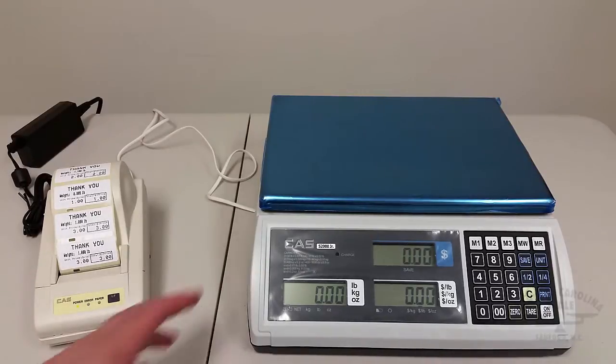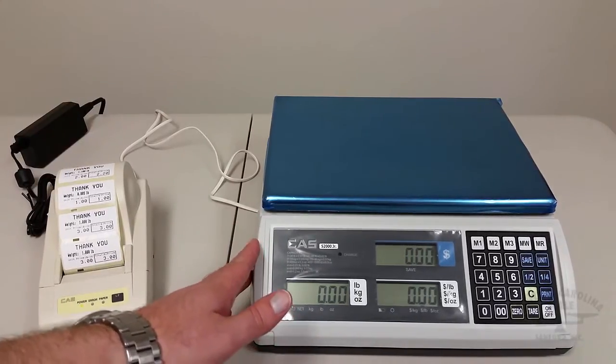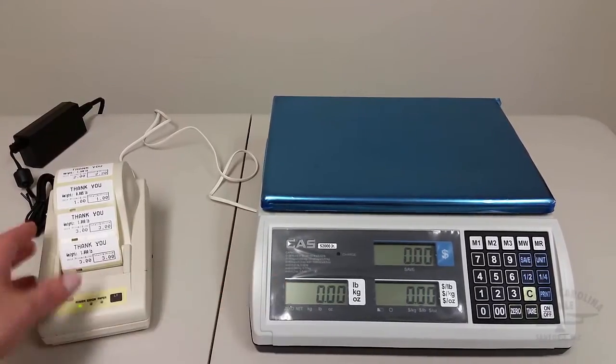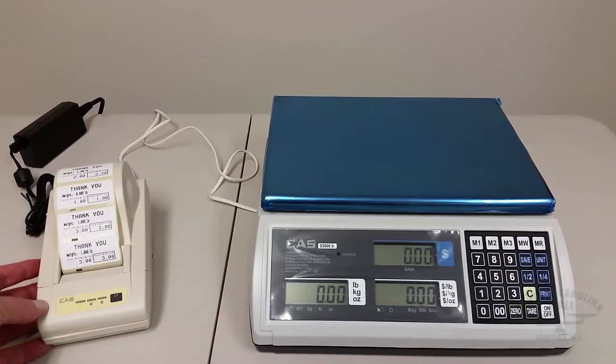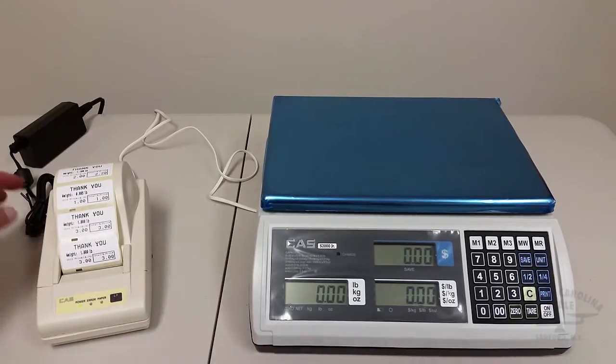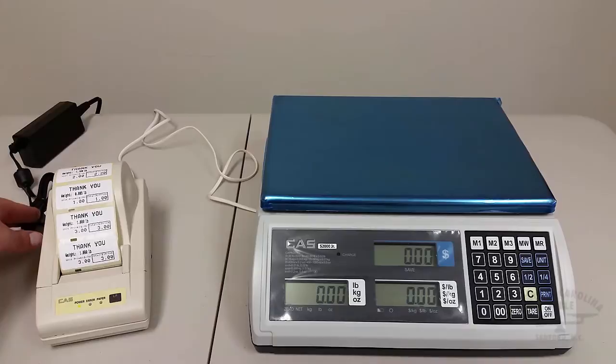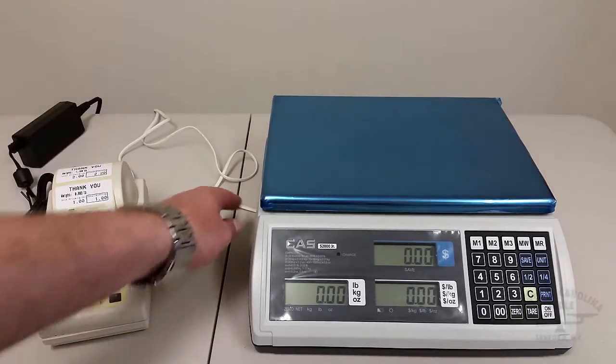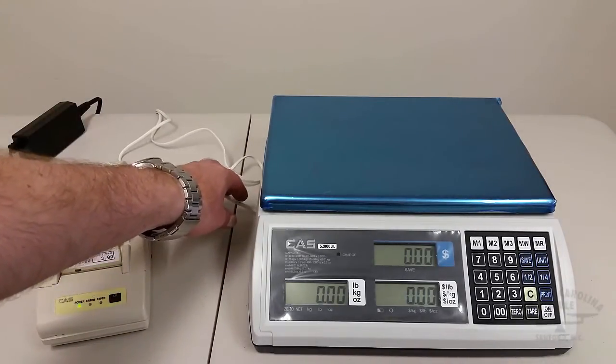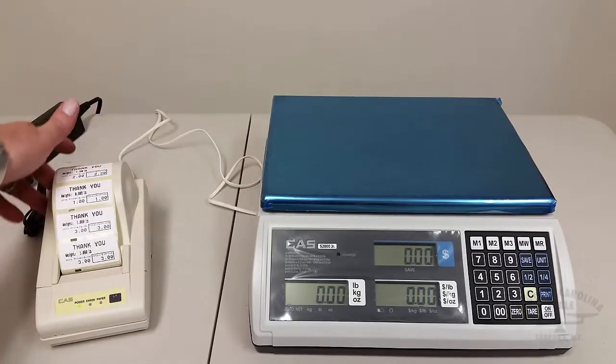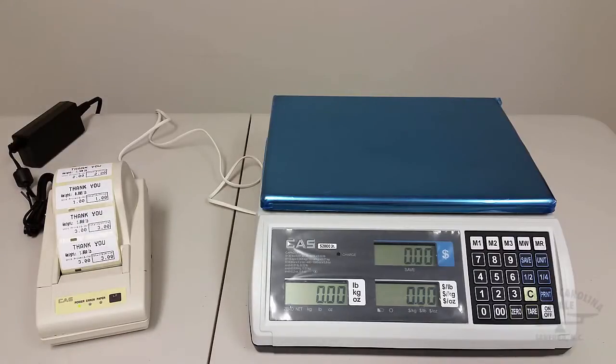Okay, here we are with the S2000 Junior. We've got the scale here, we've got the DLP50 label printer, and we've connected the power cord to the printer, and we've also ran the RS232 cable from the scale to the printer. And if we add something to the scale,